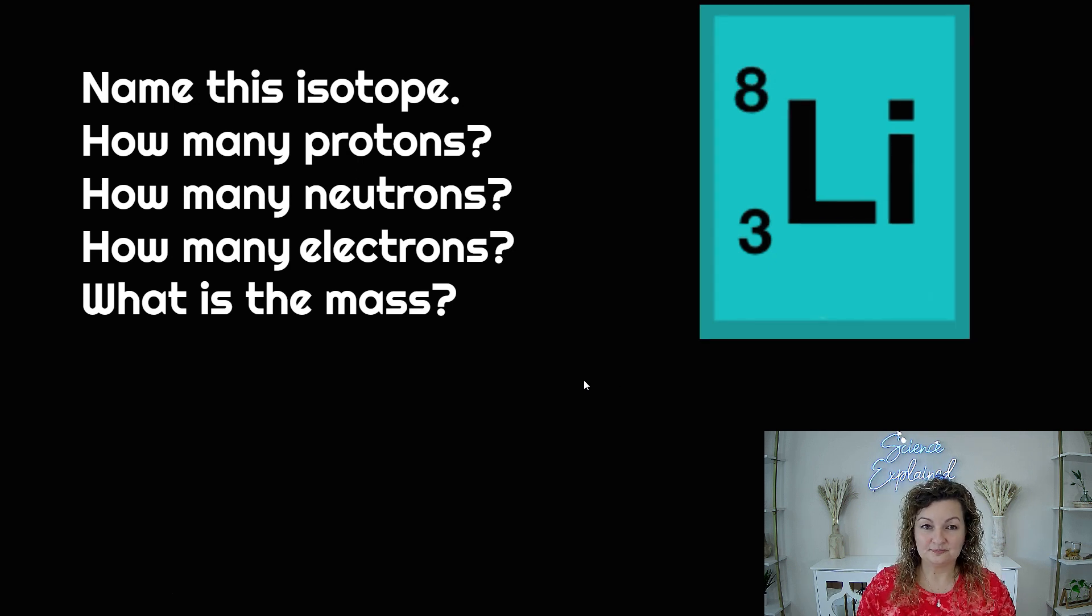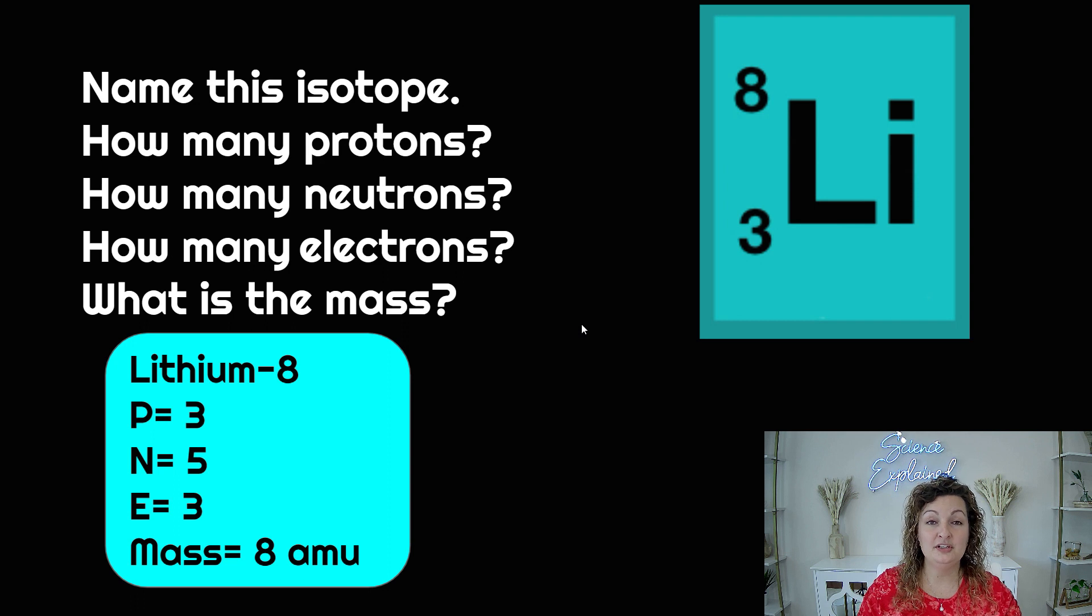Last one to try out. You can pause and check your answers. All right, let's do this. So lithium is still going to be our element. We need to write a dash and then the atomic mass at the end, which is eight. Our protons are still going to be the same, the bottom left-hand corner, and that is going to be three. It's what identifies it as lithium.